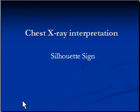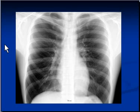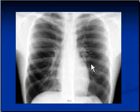Chest X-ray interpretation: the silhouette sign. X-ray images are black and white with different levels of gray scales. This difference in gray scales is because of differences in radiographic densities of anatomical structures. Visualization of the outline of an anatomical structure or boundary of an organ is only possible if two organs with two different radiographic densities are located adjacent to each other. If two organs have exactly the same density, they cannot be differentiated from one another.